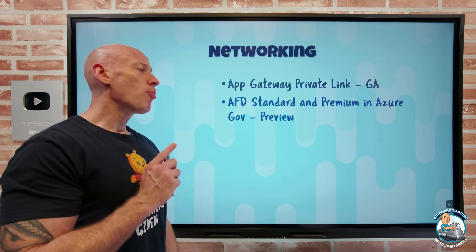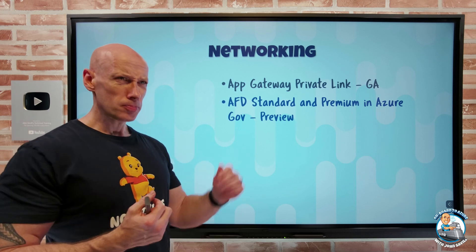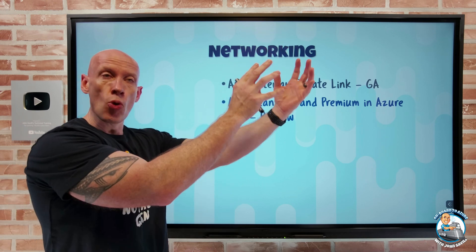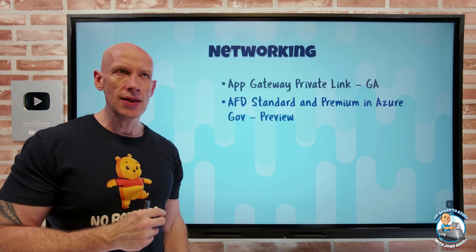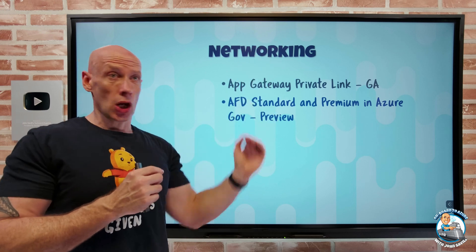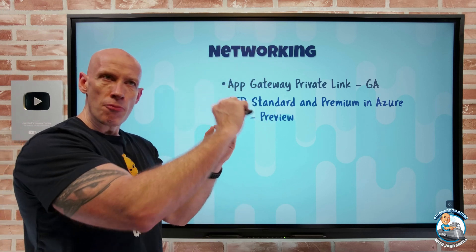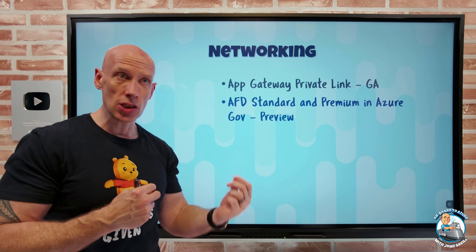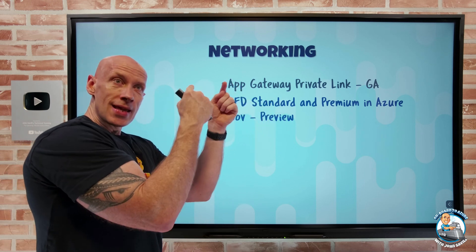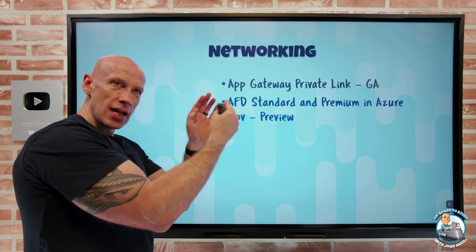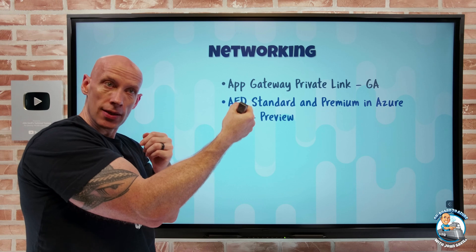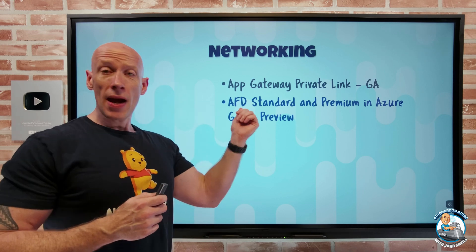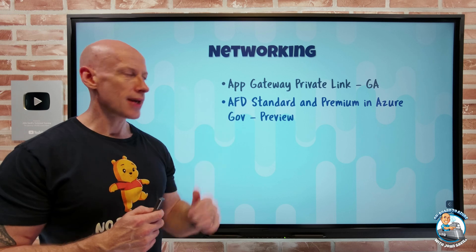Azure Front Door, both standard and premium, are now available in the Azure Gov Cloud. Azure Front Door is that layer-seven, HTTP-type workload global balancing solution. I have these anycast IP addresses — I'll connect to whichever one is closest to me, wherever I am around the world. It has a set of backends that it will go and fetch data on my behalf, integrates a content delivery network so it can cache things, and terminates the TCP and HTTPS connection at that edge location, giving a much faster connection experience. Then it grabs large blocks of data, caches them, and feeds them to me as I ask. If I'm using Azure Gov, I can now take advantage of that.